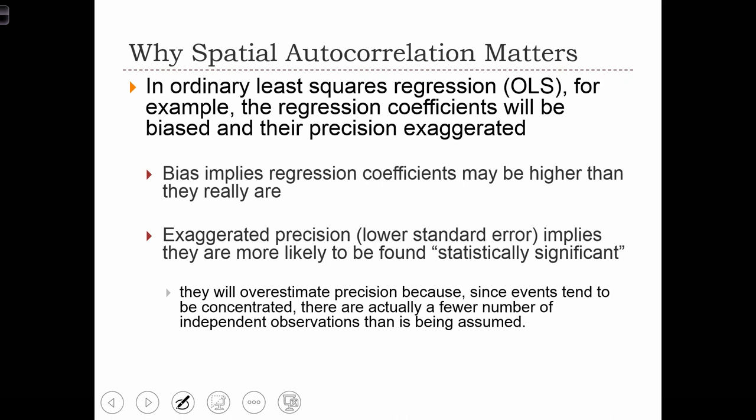We're also going to exaggerate the precision of the regression coefficient. So when we compute a t-score for the regression coefficient, our exaggerated precision is going to lead us to have higher t-scores than we should really have if the assumption of independence wasn't violated. In that case, we are going to be committing type 1 errors. We are going to find synthetically high t-scores which lead us to reject the null hypothesis incorrectly when, in fact, the truth may be that we shouldn't reject the null hypothesis — but because of our exaggerated precision, we are going to reject.